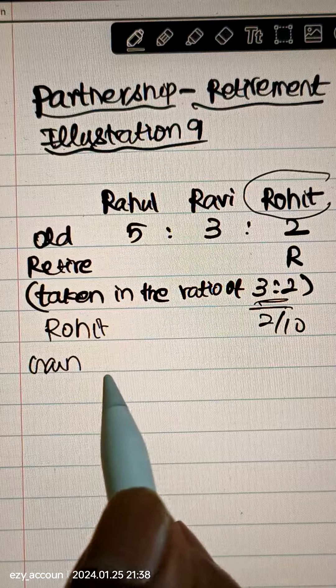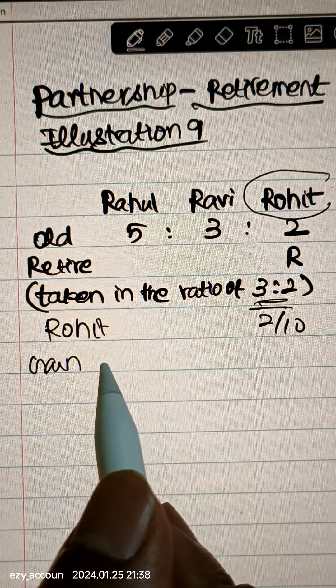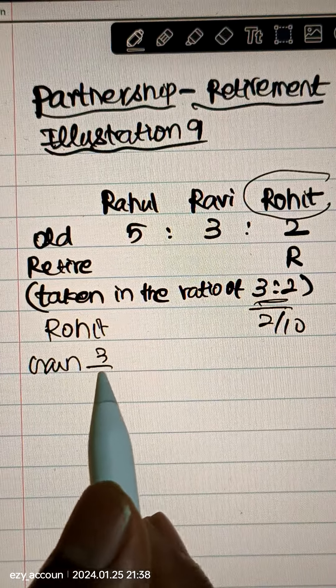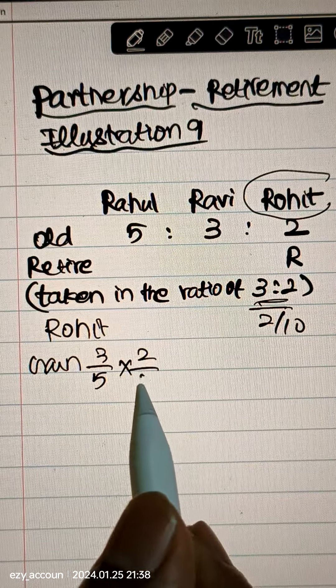Now gaining, Rahul is taking 3 to 2, which is 3 by 5 into 2 by 10.